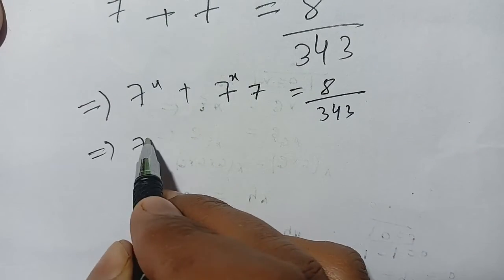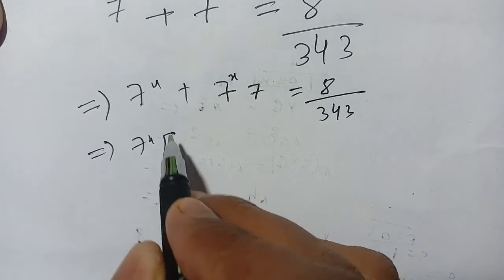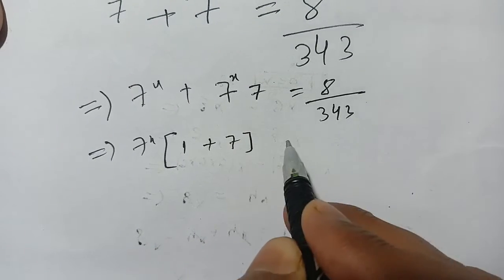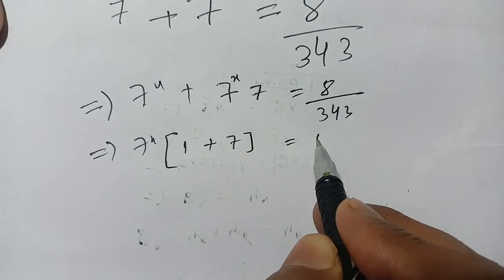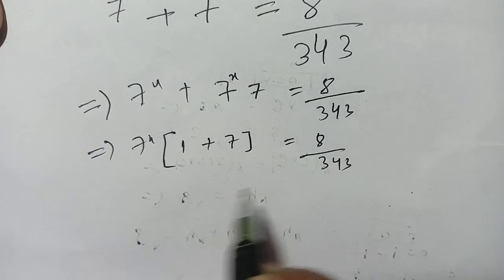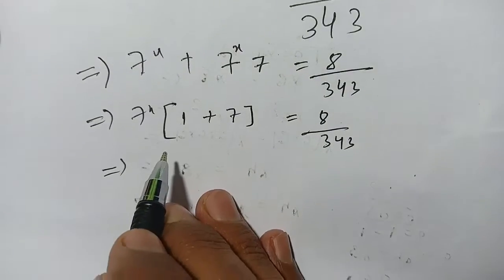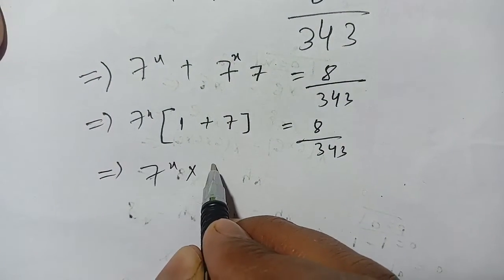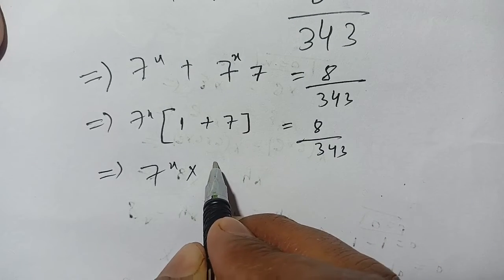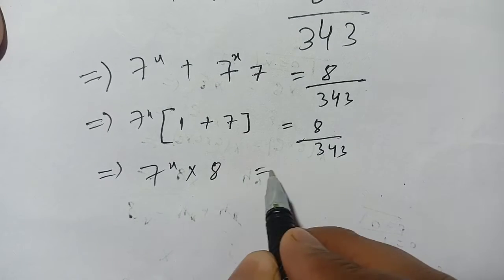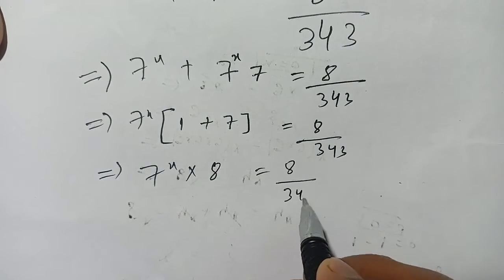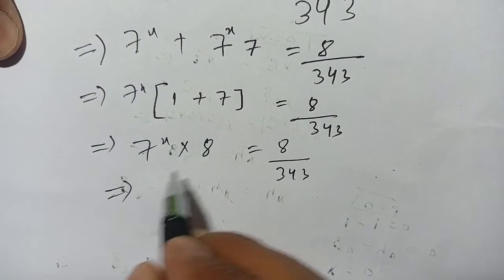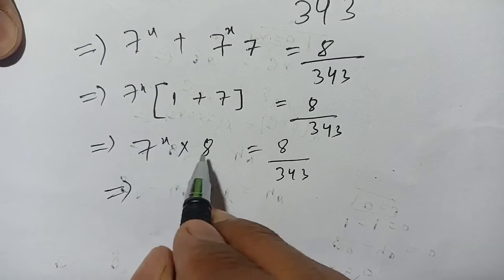Now we take 7 power x as common. The remaining terms give 1 plus 7, which equals 8. So we have 7 power x into 8 equal to 8 divided by 343. Dividing both sides by 8, the 8s cancel out.